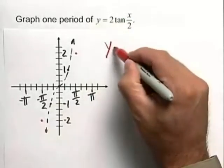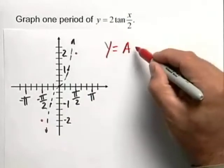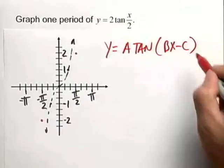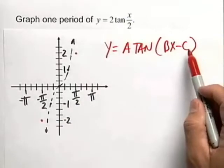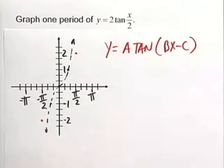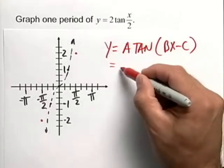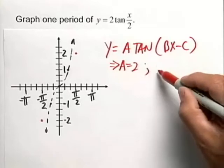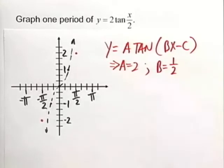This is of our general form y equals a times the tangent of the quantity bx minus c. Now notice c is 0 in this case because we have no addition or subtraction inside. We can recognize that a is equal to 2 and that b is actually equal to 1 half.